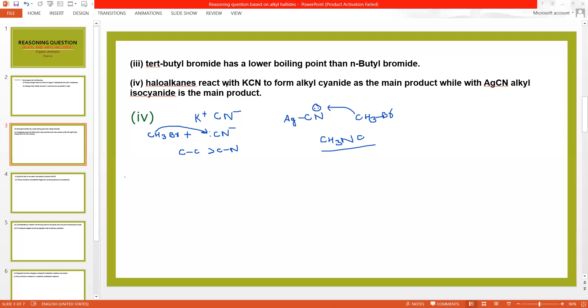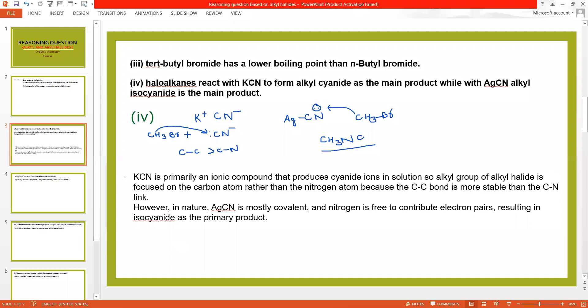I am presenting its reason, please note it down. KCN is predominantly ionic compound which produces cyanide ion in solution. So alkyl group of alkyl halide is bonded to carbon atom rather than nitrogen atom. Carbon-carbon bond is more stable than carbon-nitrogen bond. While in case of AgCN it is mostly covalent. Nitrogen is free to contribute electron pair resulting in formation of isocyanide.